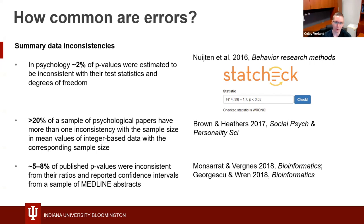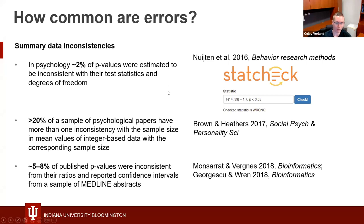Another survey found that over 20% of a sample of psychological papers have more than one inconsistency between mean values of integer-based data and the corresponding sample size. This was called the GRIM test, or the Granularity-Related Inconsistency of Means test. And about 5% to 8% of published p-values were inconsistent with their ratios and reported confidence intervals from a sample of MEDLINE abstracts. These surveys show that simple inconsistencies in summary data are not uncommon in published science.